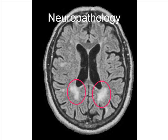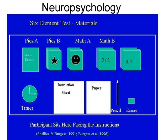Subcortical white matter atrophy is pictured in this MRI. There is a difference between cortical and subcortical dementia. Cortical dementia is atrophy of the cortex which affects higher functions such as memory, language, and semantic knowledge, whereas subcortical dementia affects mental manipulation, forgetfulness, and personality and emotional changes.